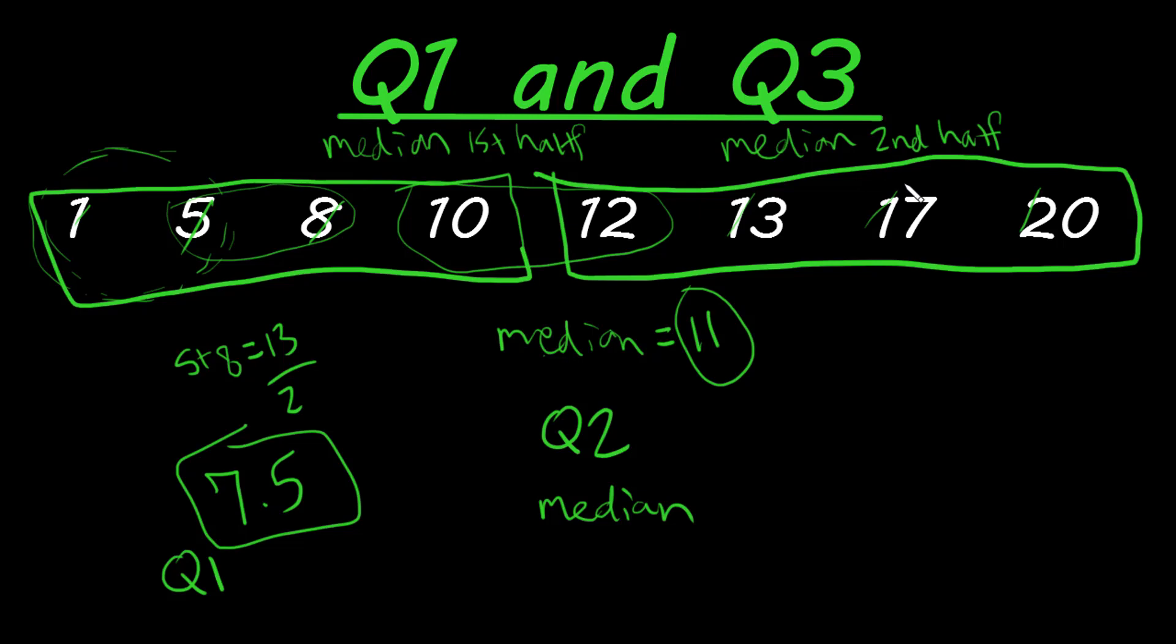And same thing, we can do this over here to find Q3. So in between these two middle numbers, we get 13 plus 17, which is 30 divided by two. And we get a median for our second half of data, which is Q3. So Q3 is 15 in our set of data here.